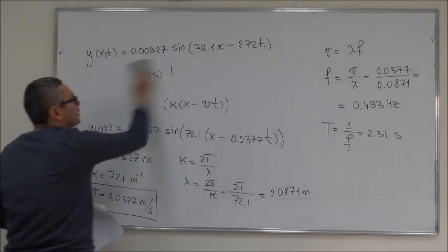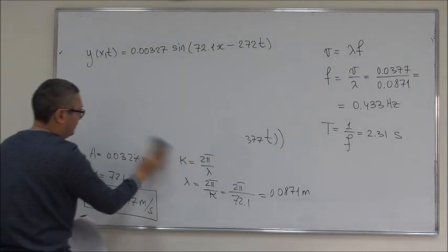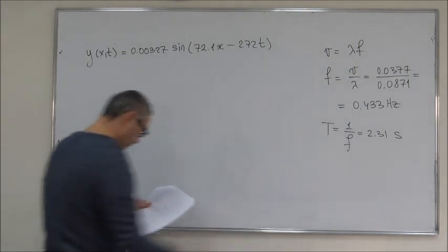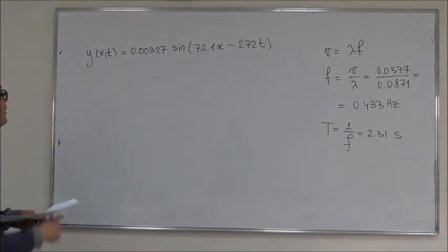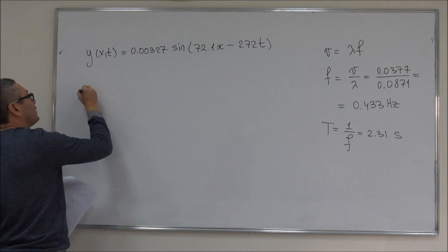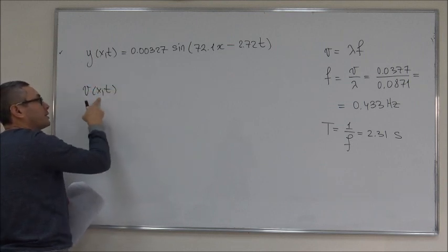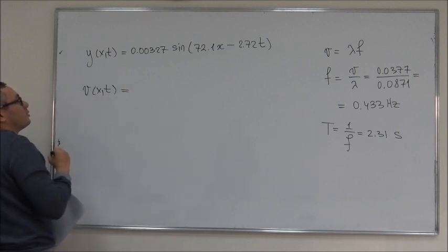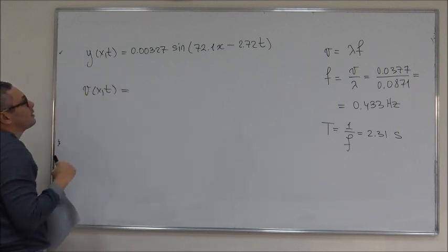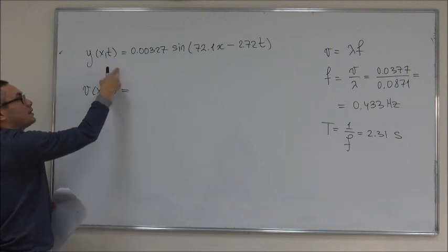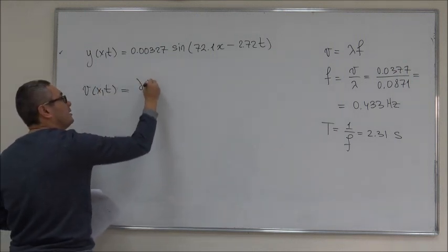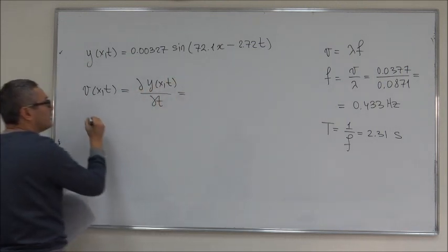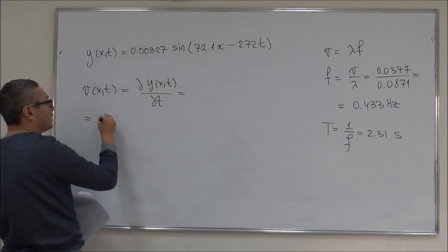Well, let's erase this. The velocity of the particle will be a function of the position of that particle and time t. So, all we need to do is to take a partial time derivative of the displacement, so that's dy(x,t)/dt. Well, if I take a derivative of this, what do I get?